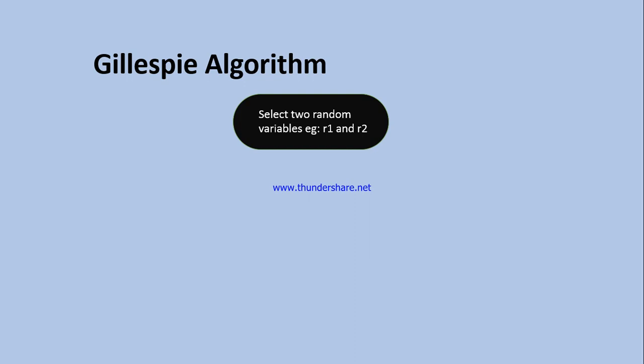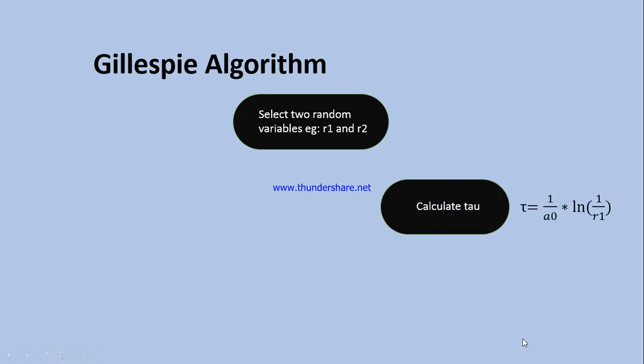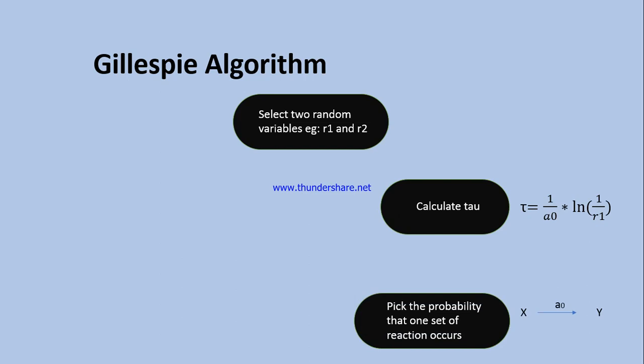We select two random numbers. The first random number is drawn from a uniform distribution from 0 to 1, say 0.5. We define a set of propensities — for a system where A is converted to B with reaction constant k, propensity equals k multiplied by the substrate concentration. We write the total propensity as a0, calculate tau (time step) using the formula, update the time, then select a second random number from uniform(0,1) and multiply it by the total propensity.